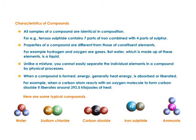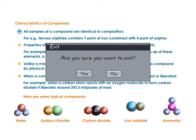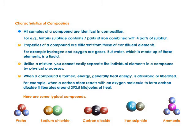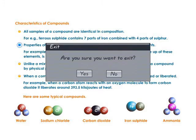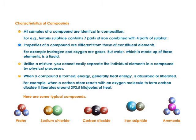Compounds: all samples of a compound are identical in composition. For example, ferrous sulfide contains seven parts of iron combined with four parts of sulfur. Properties of a compound are different from those of its constituent elements. For example, hydrogen and oxygen are gases, but water, which is made up of these elements, is a liquid.